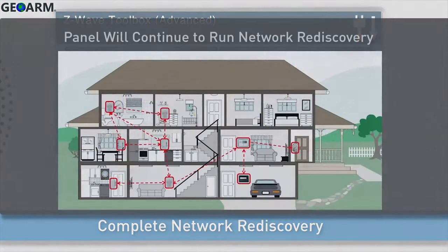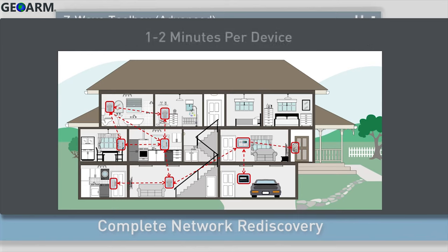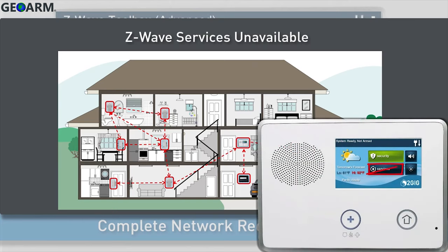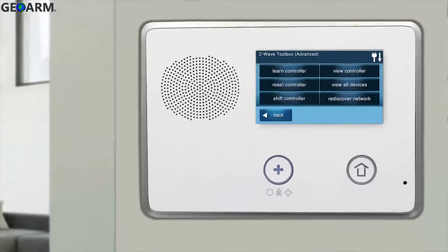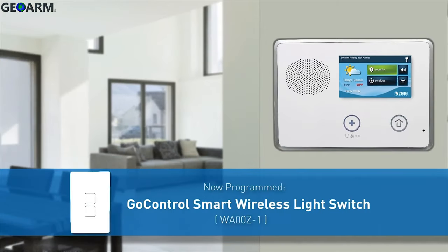Note: the panel will continue to run the network rediscovery process in the background. Network rediscovery will take around 1 to 2 minutes per Z-Wave device. Z-Wave services may be unavailable until network rediscovery is complete. Press the Home button on the panel. The GoControl Smart Wireless Light Switch has now been programmed into a GC2 panel.